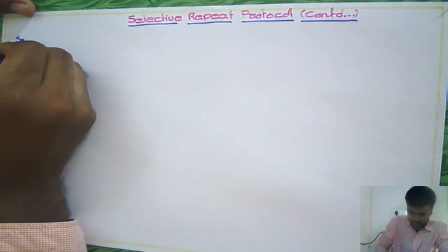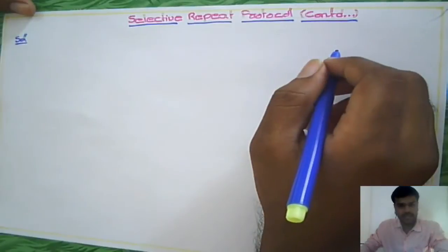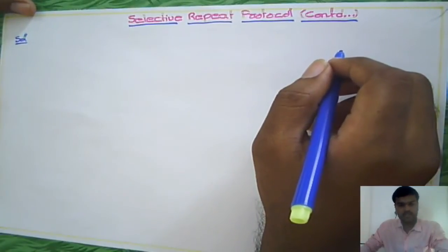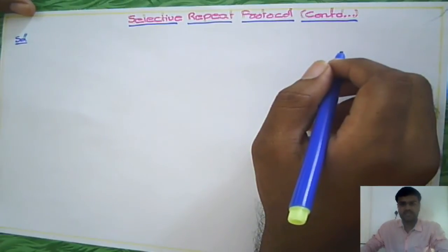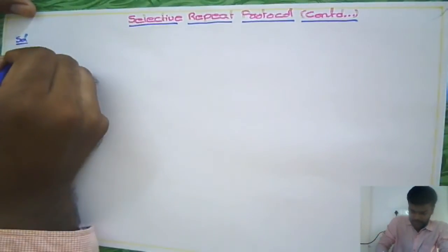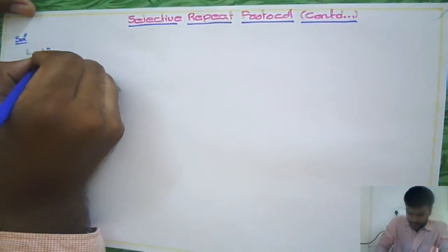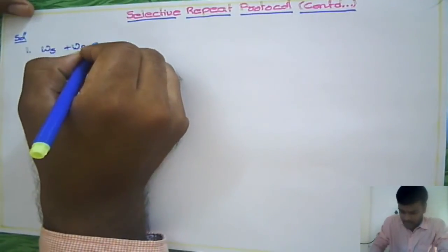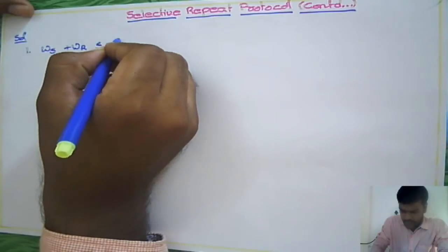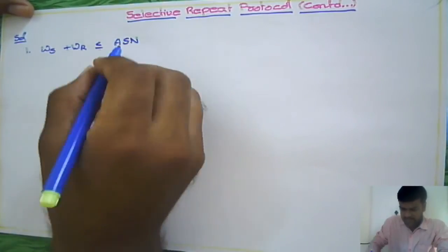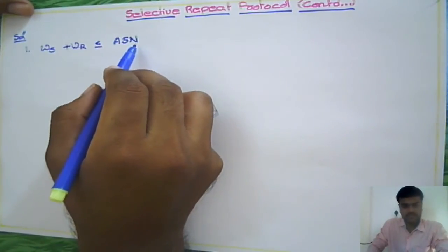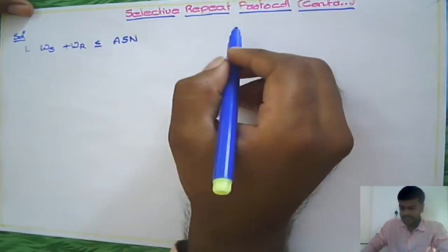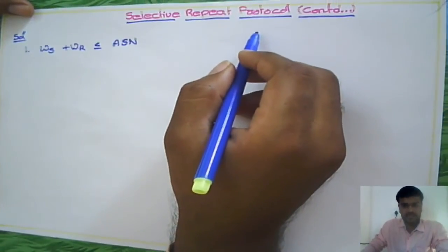The solution is similar to what we did in Go-Back-N: we adjust the window sizes of sender and receiver. We use the formula that window size of sender plus window size of receiver should always be less than or equal to the total available sequence numbers. We are adopting the same formula in Selective Repeat Protocol as well.